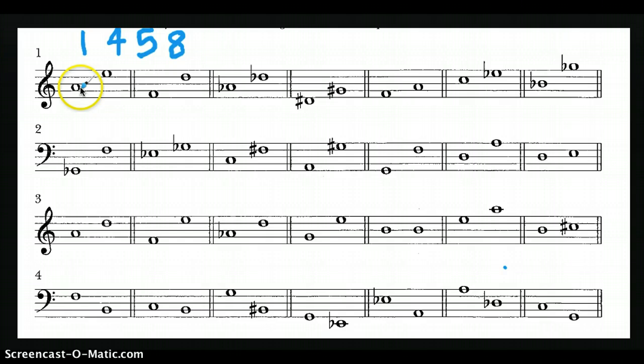So the way you figure this out is you count 1, 2, 3, 4, 5, and so this is some type of fifth. Then you ask yourself, then you pretend that this is the key, the A.